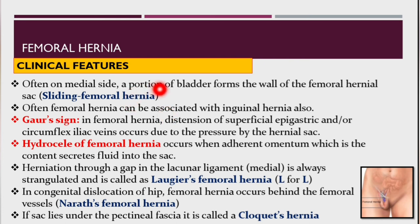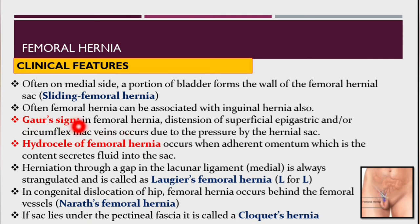On the medial side, a portion of bladder forms the wall of the femoral hernial sac — this is called sliding femoral hernia. Femoral hernia can also be associated with inguinal hernia. There is a sign known as the Gaur sign — a distension of the superficial epigastric and/or circumflex iliac veins occurring due to pressure by the hernial sac. Another condition is hydrocele of the femoral hernia, which occurs when adherent omentum secretes fluid into the hernial sac.